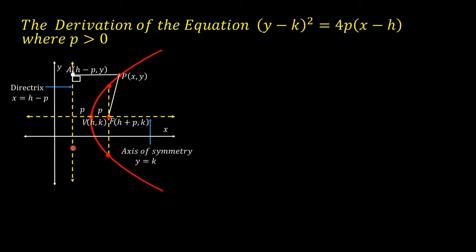The directrix is p units away from the vertex, and the focus is also p units away from the vertex. Point P with coordinates (x, y) is a point on the parabola and represents every point on the parabola. According to the definition of a parabola, every point is equidistant from the focus and the directrix. Therefore, PF = PA.